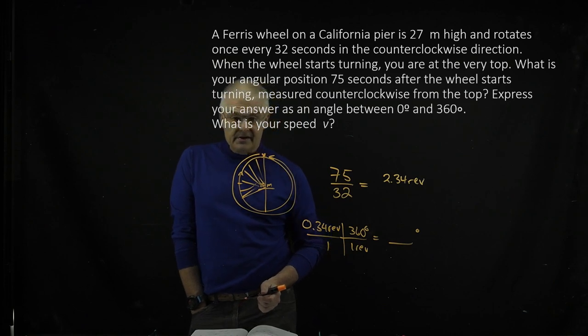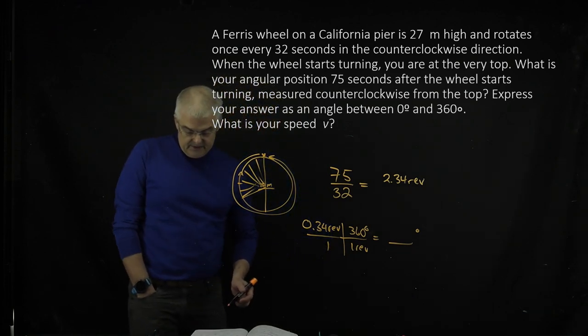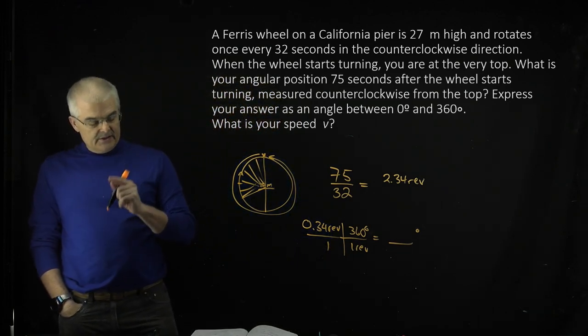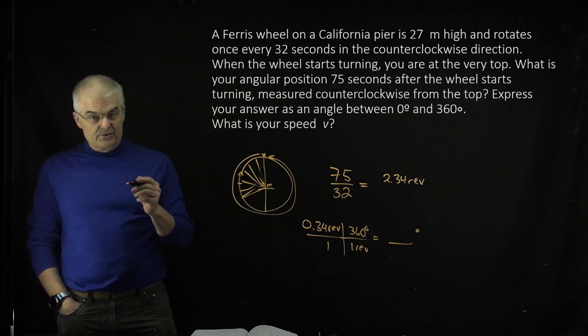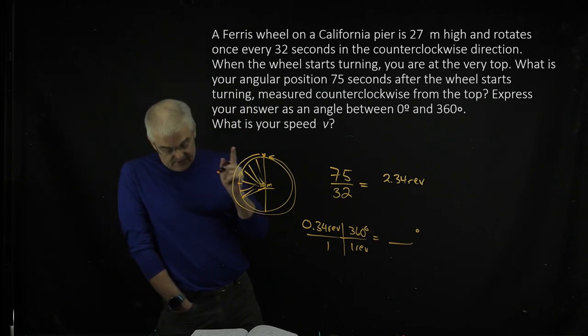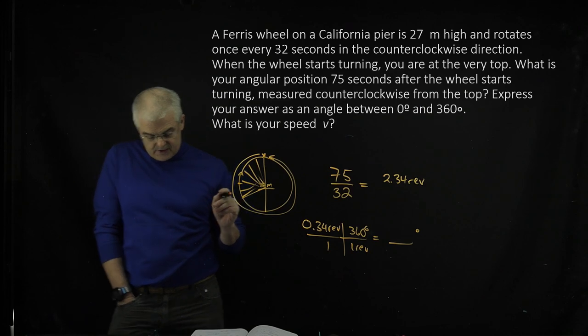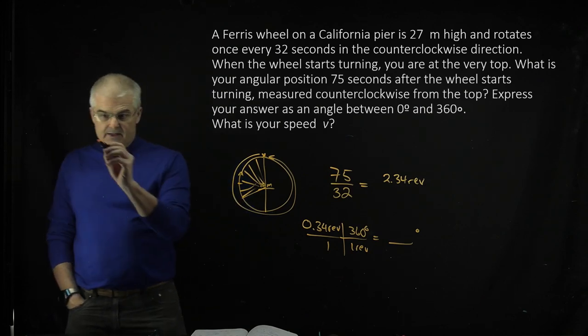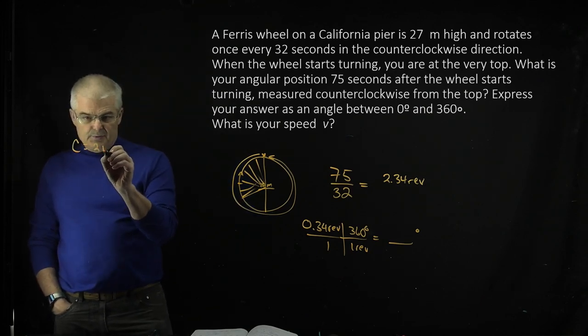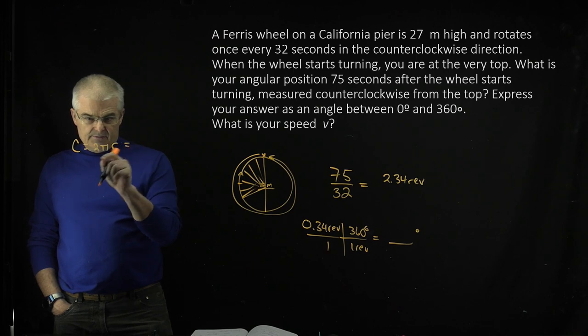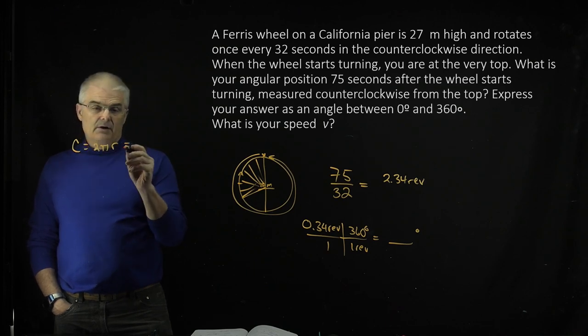For the second part, it says, what is your speed? Now, that's speed, so that's going to be your regular speed in meters per second. So what I did is I did C equals 2πr, that's the circumference of a circle.